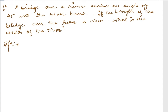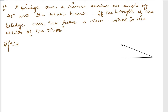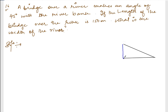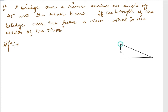We need to understand something from this question. There is a riverbank — this is a riverbank. This is a river actually. So this is a bridge, this is a river. And there is a bridge which makes an angle of 45 degrees with the riverbank. It makes an angle of 45 degrees with the riverbank.